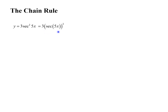What do we see on the outside? We see the squared and this 3. So y prime: I take 3 times something squared — the 2 jumps down by the power rule — giving 6 times something to the 1 power. That takes care of that outside stuff.